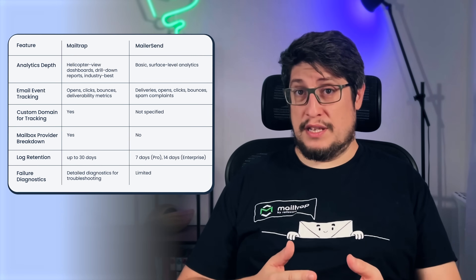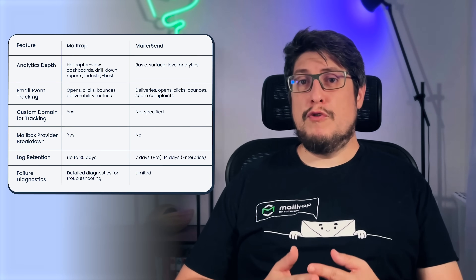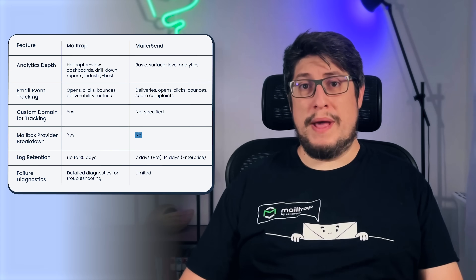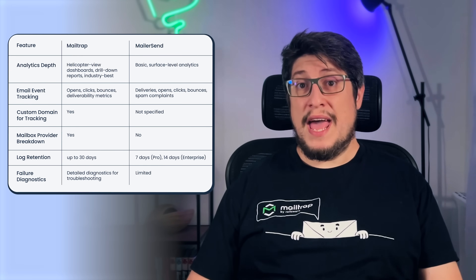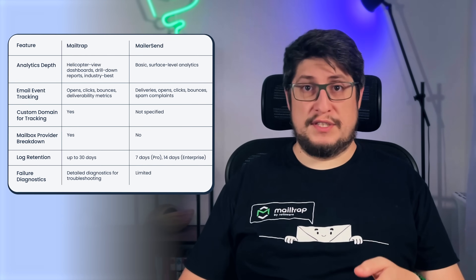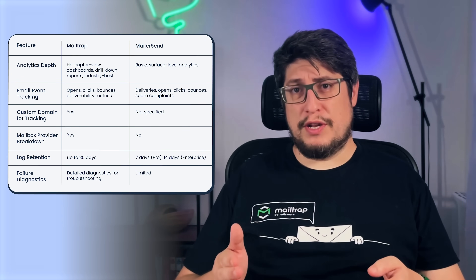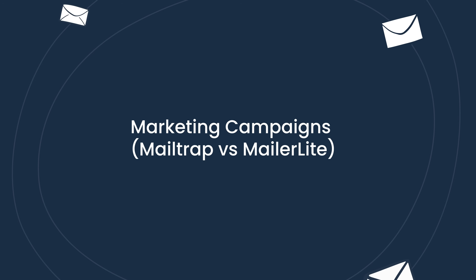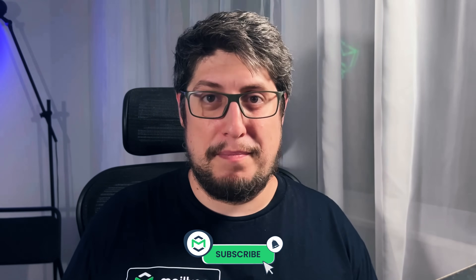You can inspect API and SMTP logs, filter by response codes and endpoints, and review payloads to help identify issues. However, the data is more surface-level compared to MailTrap, with no mailbox provider breakdown, limited visibility into failure diagnostics, and short log retention — just seven days on Pro plans and 14 on Enterprise. This means that while MailerSend covers the basics of delivery tracking, MailTrap is better suited for teams that need long-term visibility and deeper performance insights. Now it's time to see how MailTrap and MailerSend's sister platform MailerLite compare in terms of email marketing features.